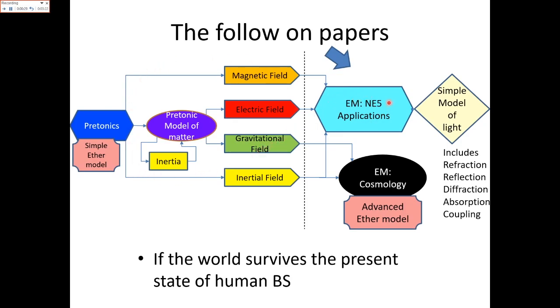This is going to be the electrogravity paper that's going to be split off into two follow-on papers. This is new electromagnetism version 5 applications paper, which will show you how to take the NE v5 equations and run simple experiments with magnets, wire, and glue to get the same answers you can get with classical theory. Then there'll be a simple model of light - this is going to include the models for refraction, reflection, diffraction, absorption, and coupling.